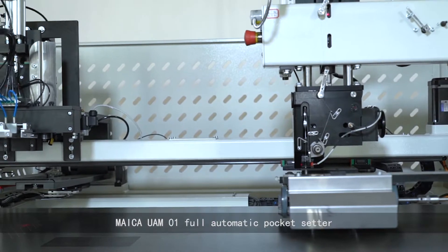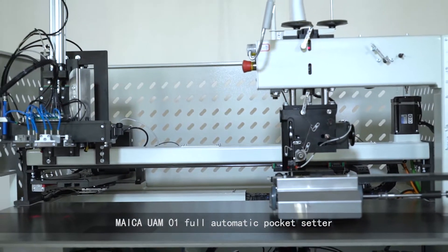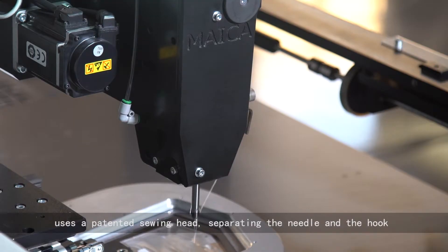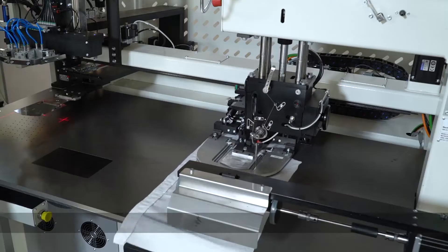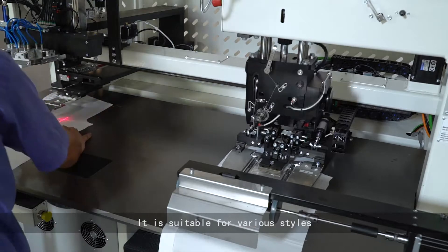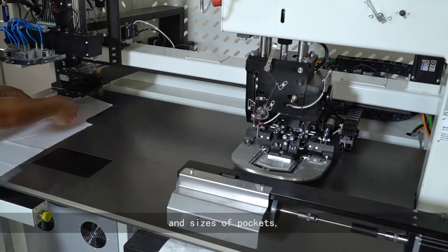Mica UAM01 Full Automatic Pocket Setter uses a patented sewing head, separating the needle and the hook. With a wide sewing range, it is suitable for various styles and sizes of pockets.